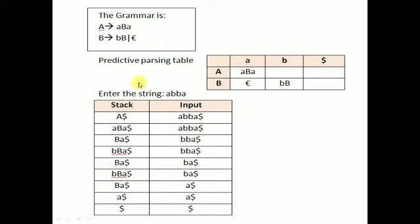In our example, we have the production rule B gives epsilon and the variable is B. You have to calculate the follow of B. As per this rule, the follow of B will be A. That's why B gives epsilon is to be written in the column of small a. In the column of small a, we have written B gives epsilon. In this way, the predictive parsing table can be constructed for the given grammar.